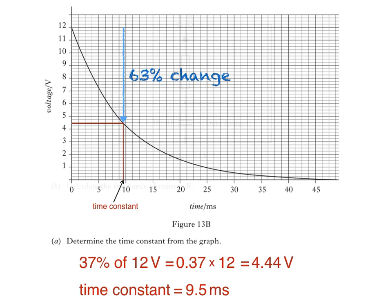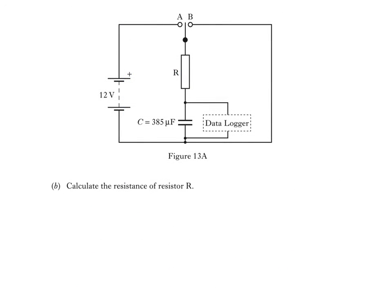Part B of the question asks us to calculate the resistance of resistor R. We've seen how to find the time constant from a graph of voltage against time as the capacitor discharges. Time constant can also be calculated using this equation, by multiplying resistance R by capacitance C.